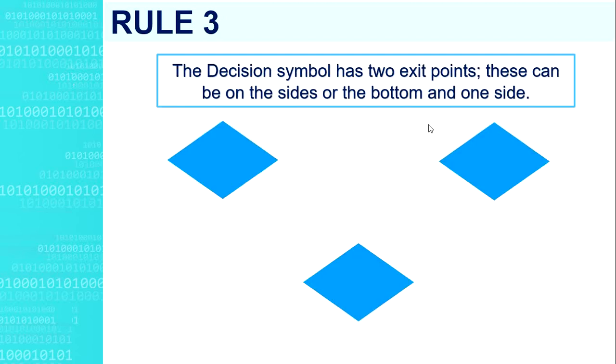Rule number three. The decision symbol has two exit points. These can be on the sides or the bottom and one side.